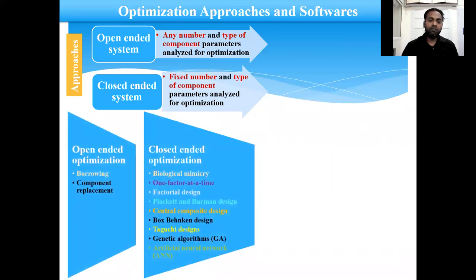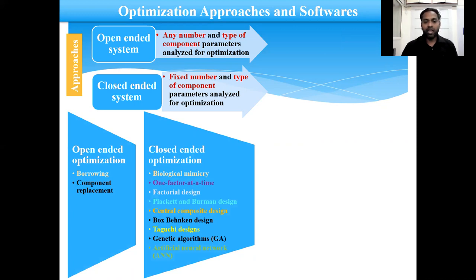So these are the different types of open-ended optimization techniques, such as the borrowing approach and the component replacement approach. Another important approach is closed-ended optimization, where different methods are involved such as biological mimicry, one factor at a time, factorial design, Plackett-Burman design, central composite design, Box-Behnken design, Taguchi design, genetic algorithm, and artificial neural network.